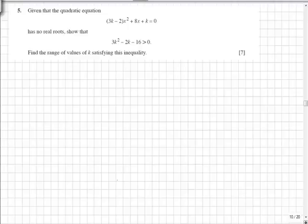In question 5 we're asked to prove that the given quadratic having no real roots has a range of potential values of 3k squared minus 2k minus 16 greater than 0.